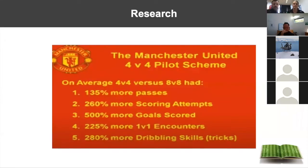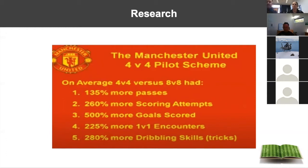This was a study done at Manchester United academy back in 2001. They went to Spain and France and noticed the skill level of the United players wasn't as developed as other countries. They decided to base their academy games around a 4v4 situation rather than 8v8. Looking at the stats: the 4v4 pilot scheme versus 8v8 showed 135% more passes, 260% more scoring attempts, 500% more goals, 225% more 1v1 encounters, and 280% more dribbling skills — a lot more touches and game-realistic opportunities.